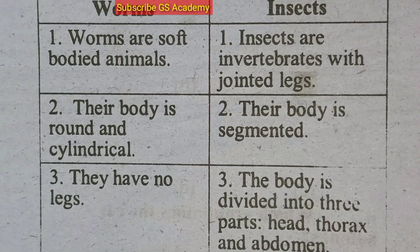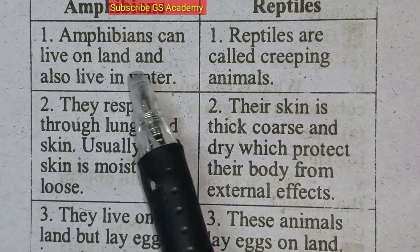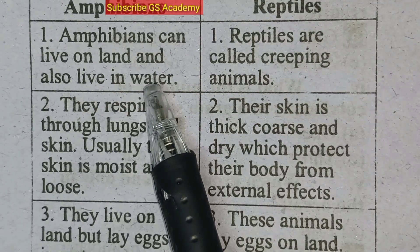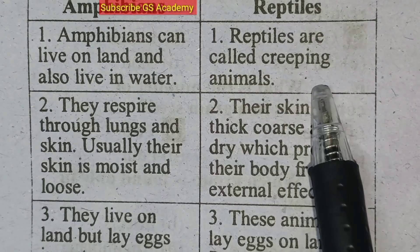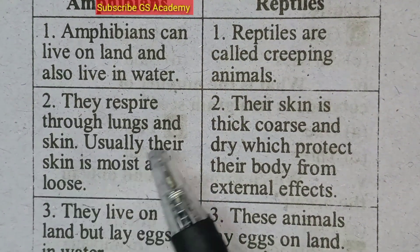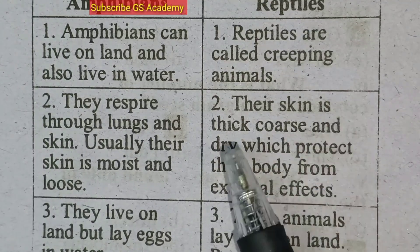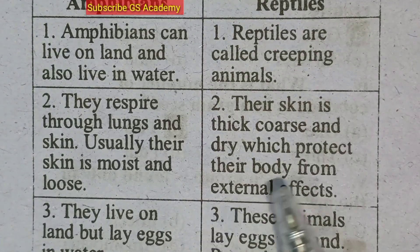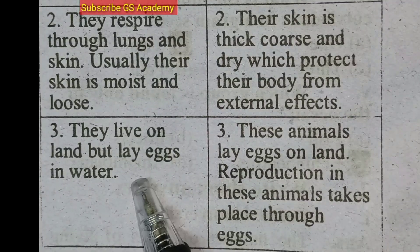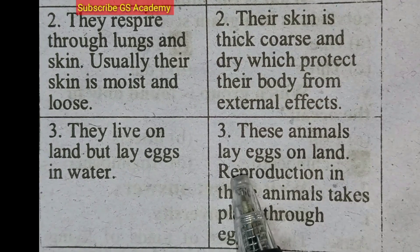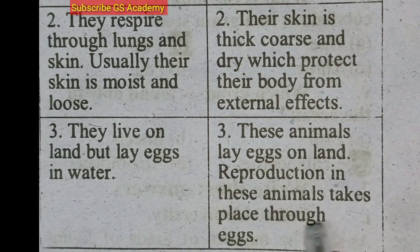Now the differences between amphibians and reptiles. Amphibians can live on land and also in water. They respire through lungs and skin, and their skin is usually moist and loose. Reptiles are creeping animals. Their skin is thick, coarse, and dry, which protects their body from external effects. Amphibians lay eggs in water, while reptiles lay eggs on land.